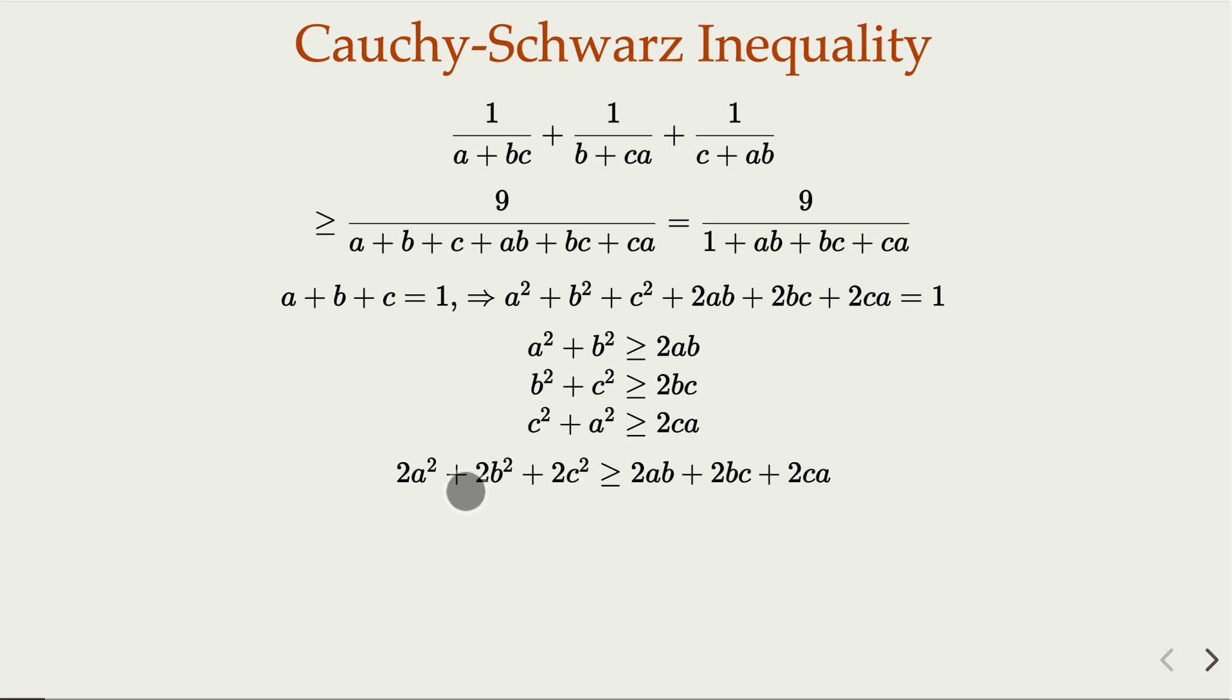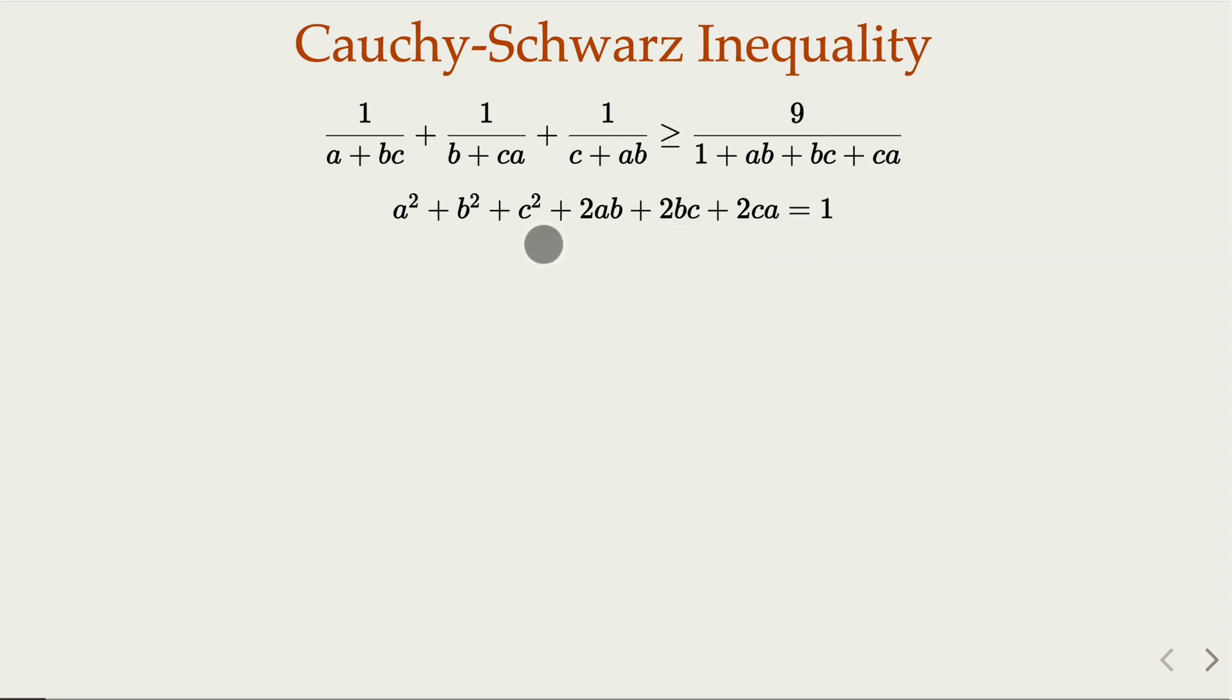So you divide by 2, and then you know that ab plus bc plus ca is going to be less or equal to the sum of squares. That's the result we have.